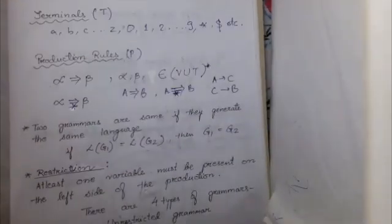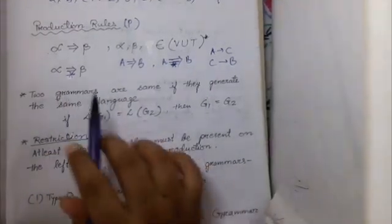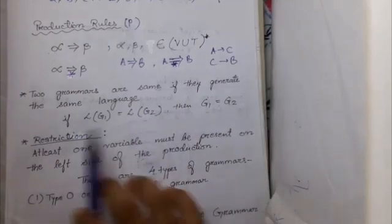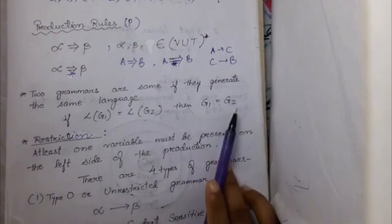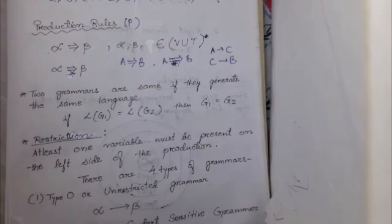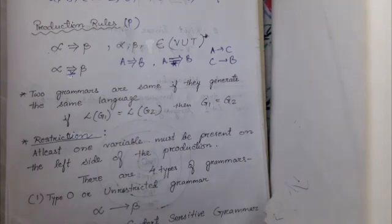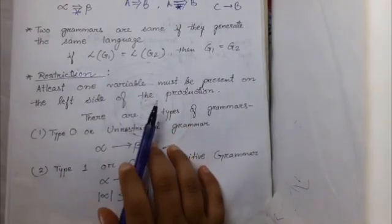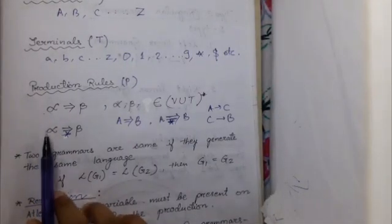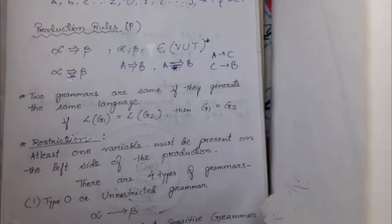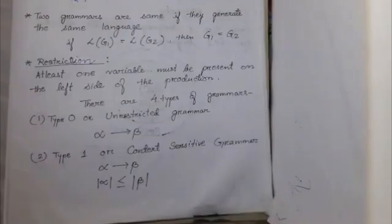Two note points: First, two grammars are the same if they generate the same language. That means if the language of grammar one equals the language of grammar two, then grammar one equals grammar two. For example, if L1 is all even strings and L2 gives all strings divisible by two, they are the same language, so the grammars are equal. Second, it is a restriction on all grammars that at least one variable must be present on the left side of the production — in alpha, there must be at least one variable.